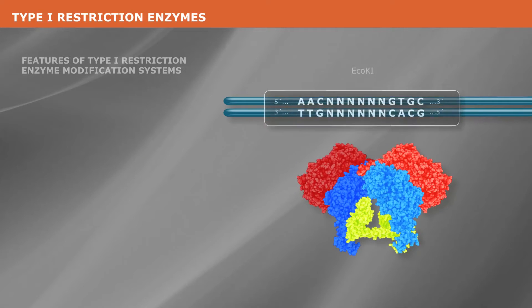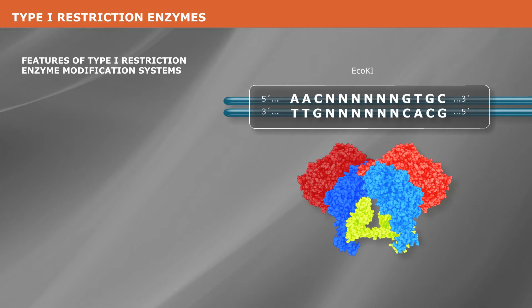The type one restriction modification systems recognize a specific bipartite sequence with the half sites separated by five to eight nonspecific nucleotides. They do not, however, produce a predictable cleavage pattern.